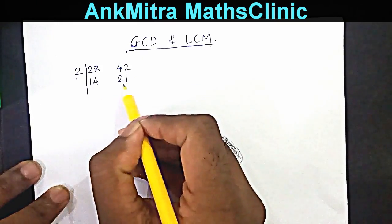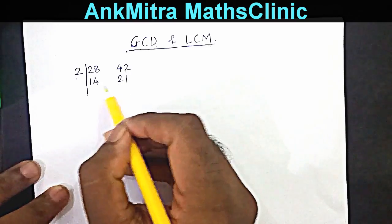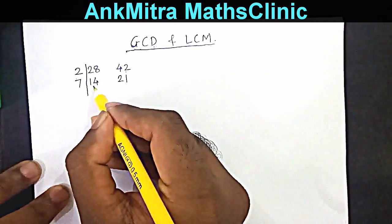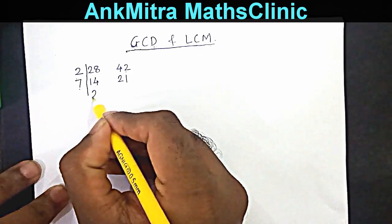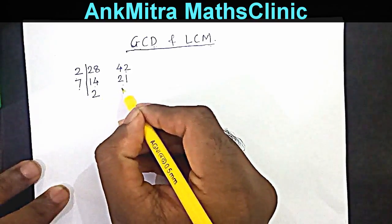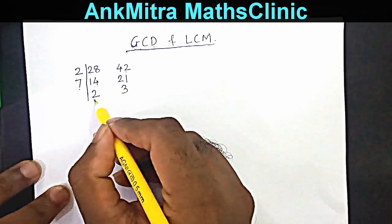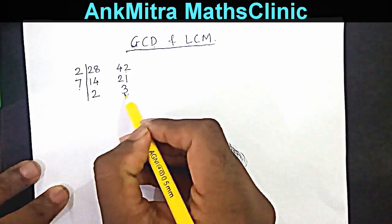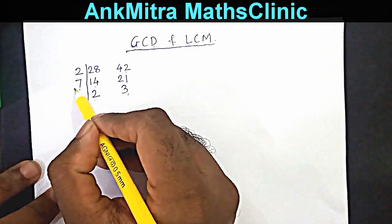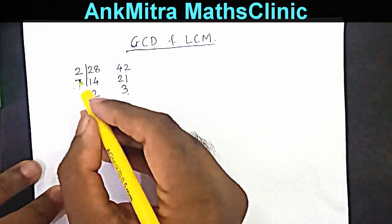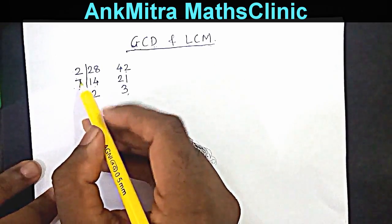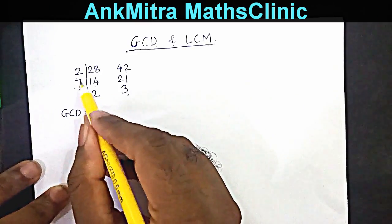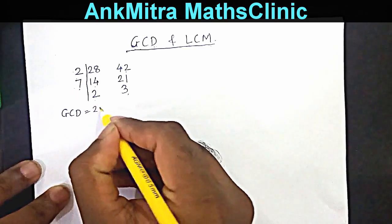Now we find the common factor between 14 and 21. Both are multiples of 7, so 7 is a common factor. 14 divided by 7 gives 2, and 21 divided by 7 gives 3. So we end up with 2 and 3 as the uncommon factors, whereas 2 and 7 are the common factors. GCD is the product of the common factors.